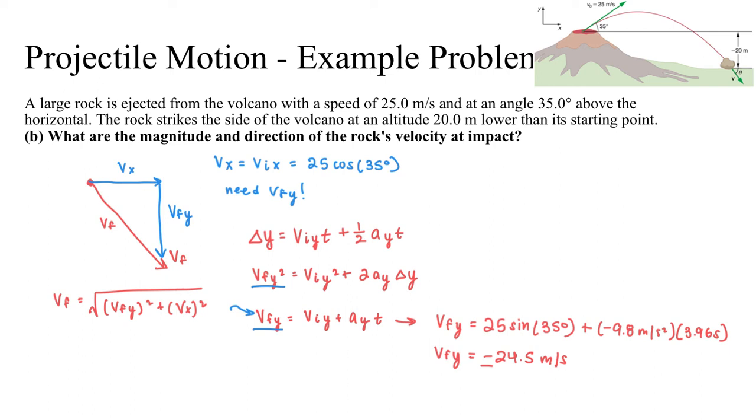So I'll go back to my v_f equation over here on the left. That will give me that v_f is the square root of v_fy squared, which I know is negative 24.5 squared plus v_x, which was 25 cosine 35 degrees squared. So putting all that into my calculator, I will get a final velocity of 31.9 meters per second. So there's my magnitude.